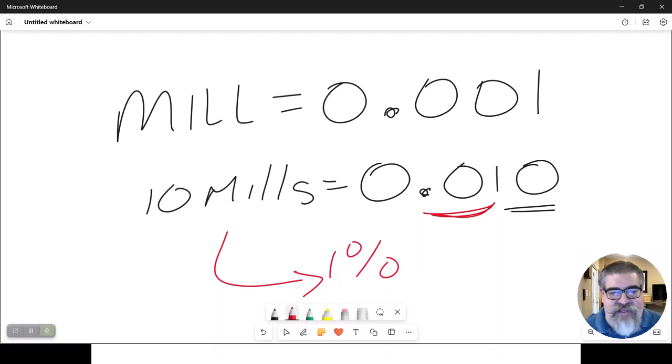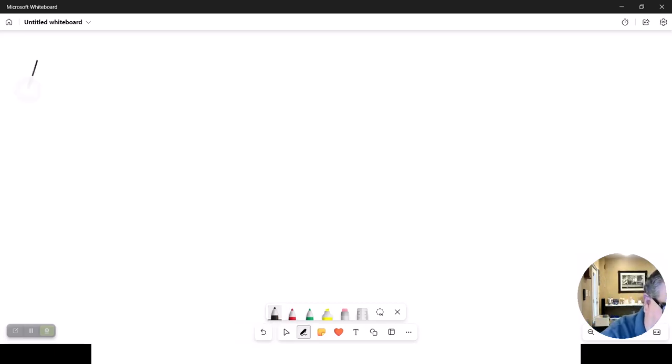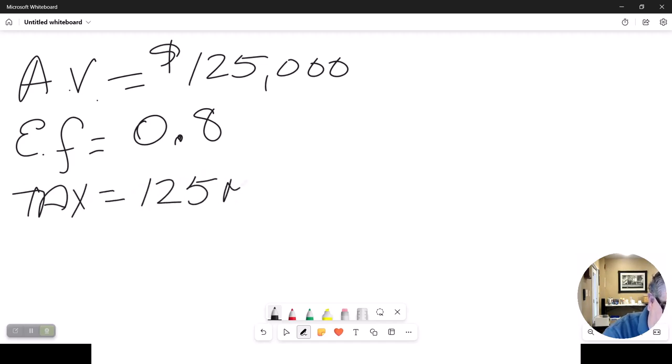So, let's do a math example. If this property had an assessed value of $125,000, and I'm telling you that it had this thing called an equalization factor of 0.8, and the tax rate on this is 125 mills.